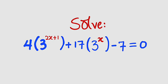Hello good viewers. In this tutorial, we are going to find a solution to this simple exponential equation. The equation is 4 multiplied by 3 to the power of 2x plus 1, then plus 17 multiplied by 3 to the power of x, then minus 7 equal to 0.